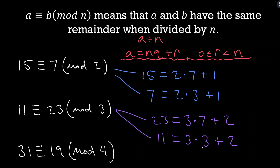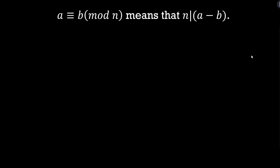Moving forward, notice from our division algorithm expansions that both remainders were the same — plus 1 and plus 1. Think about what happens when we subtract 15 and 7: those remainders are going to cancel, leaving a multiple of 2. This leads perfectly into the second way of defining modular congruence. Textbooks often start with this second definition and later prove it implies that a and b have the same remainder. I personally prefer starting with the intuitive definition first.